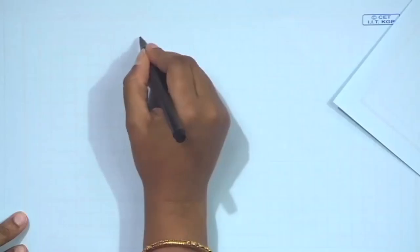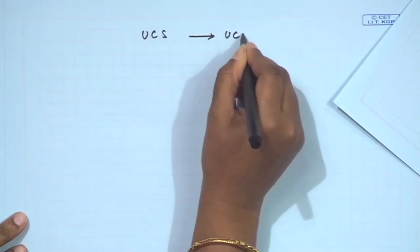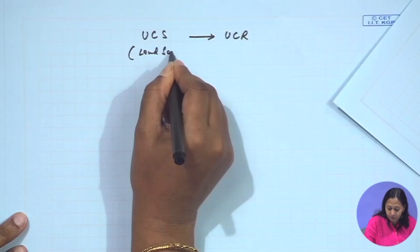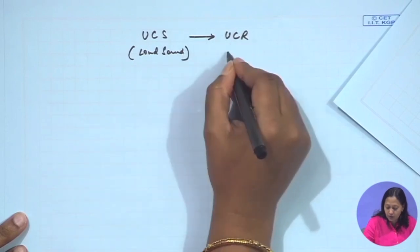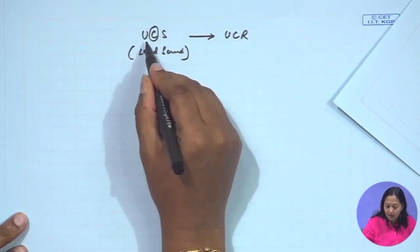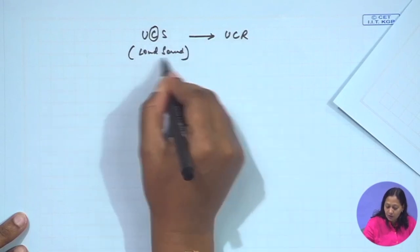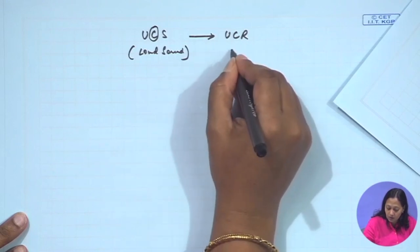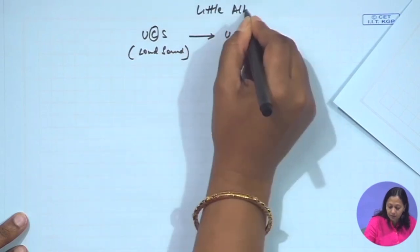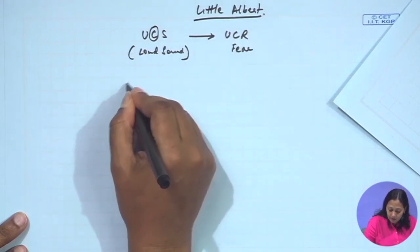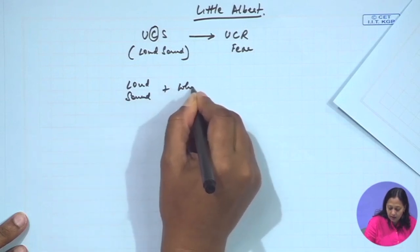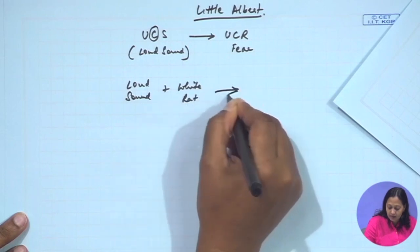In this conditioning diagram for Albert: the unconditioned stimulus that produces an unconditioned response is the loud sound. The loud sound naturally — without being learned — produces the response of fear in Little Albert. Then the loud sound was paired with a white rat, and this also produced fear. Initially, the fear is being produced by the sound but not by the rat.